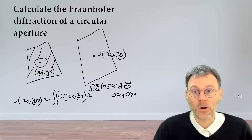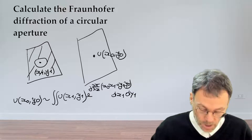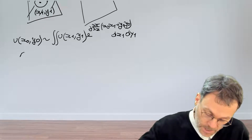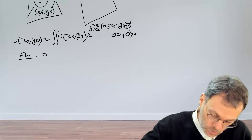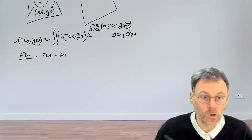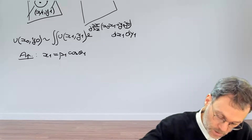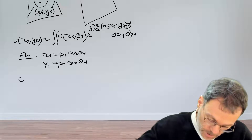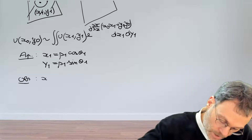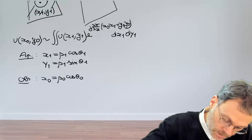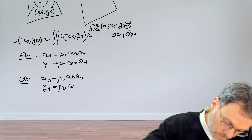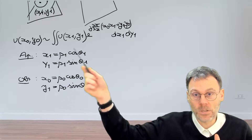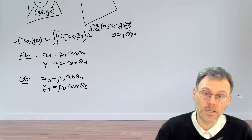This is the formula for Fraunhofer diffraction. In our case we're dealing with a circular aperture, so everything is circularly symmetric. It makes sense to rewrite that formula using cylindrical coordinates. In the aperture plane, write x₁ = ρ₁ cos θ₁ and y₁ = ρ₁ sin θ₁, and similarly in the observation plane: x₀ = ρ₀ cos θ₀ and y₀ = ρ₀ sin θ₀. Now pause the video, introduce this substitution into the Fraunhofer diffraction integral, and see where that takes you.